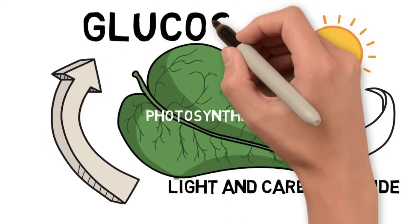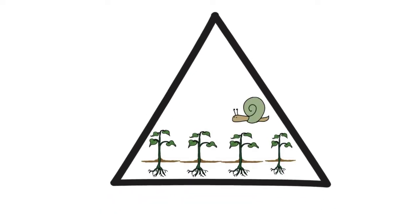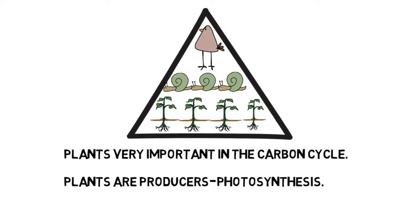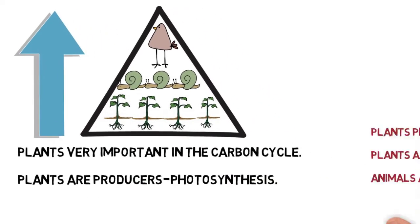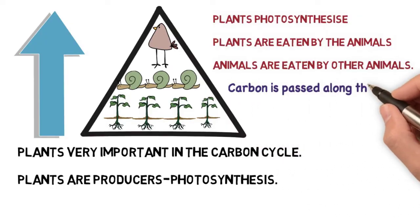In ecology, we studied pyramids of numbers. It was a way of representing the number of organisms at each trophic level in a food chain. Now we can appreciate not just the energy being passed onwards, but also the carbon that's going to be passed onwards upwards through the chain. So carbon gets fixed into organisms as it moves along.